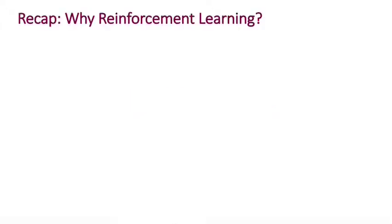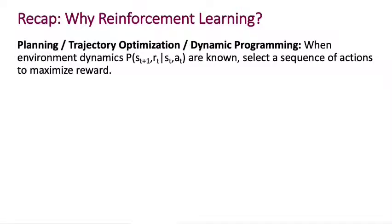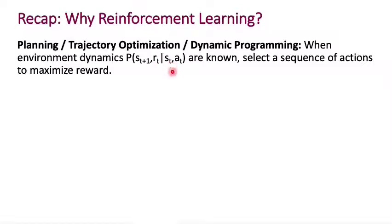To motivate model-based reinforcement learning, let's go back to why we want to do reinforcement learning. We have classes of approaches based on dynamic programming, like value iteration and policy iteration, and from other branches of study like planning and trajectory optimization. We know what to do when the environment dynamics are known — when P(s_{t+1}, r_t | s_t, a_t) are known — then you know exactly what to do to maximize your reward.